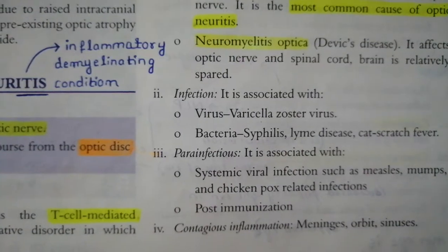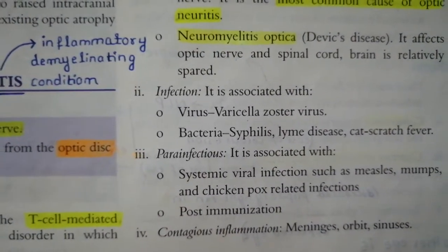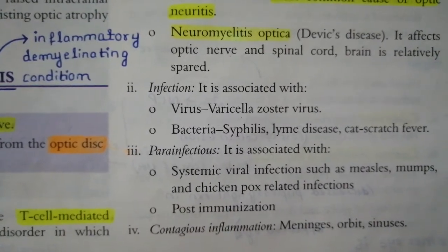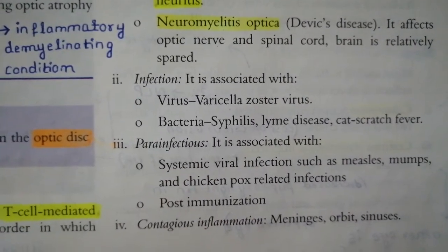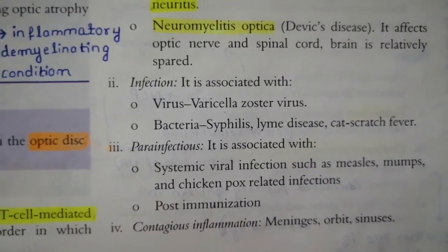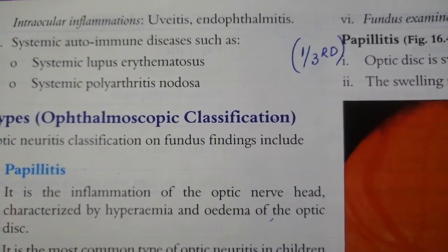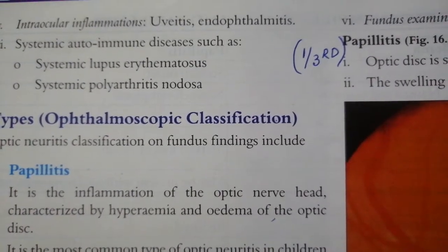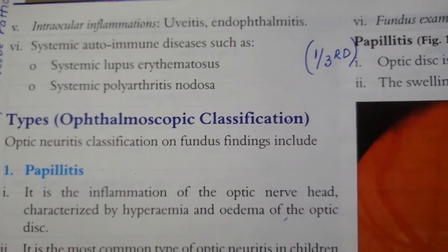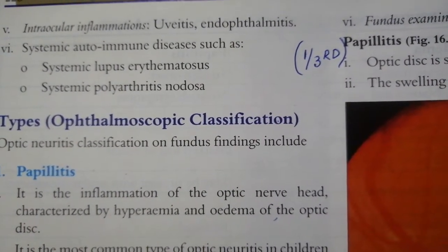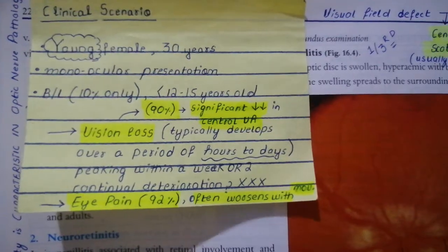There are other causes of optic neuritis as well. Infectious causes include syphilis and Lyme disease. Para-infectious causes include following an episode of immunization or meningitis spreading contiguously from the brain to the optic nerve. Certain intraocular inflammations like uveitis and endophthalmitis can also contiguously spread and involve the optic nerve.